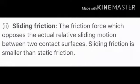Sliding friction is the friction that opposes the actual relative sliding motion between two contact surfaces. Sliding friction is smaller than static friction. The force of friction between two objects in contact when one just slides over the other is called sliding or kinetic friction. The force required to keep a body in motion is less than the force required to start the motion, therefore sliding or kinetic friction is less than the limiting static friction.